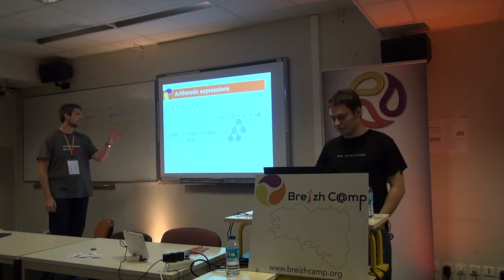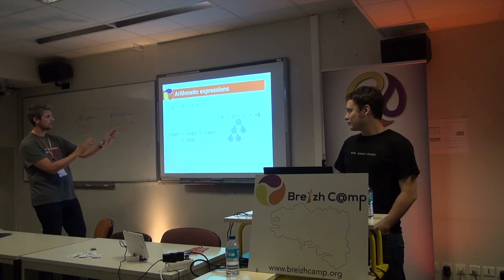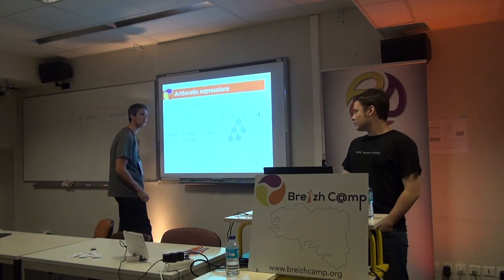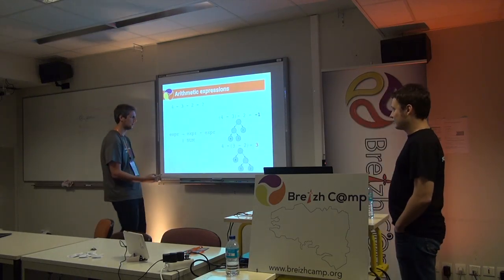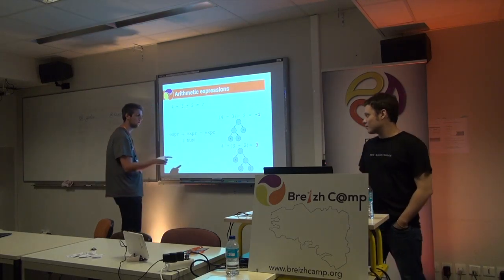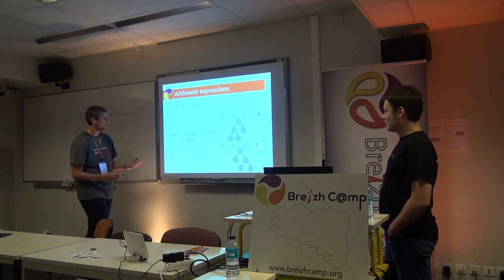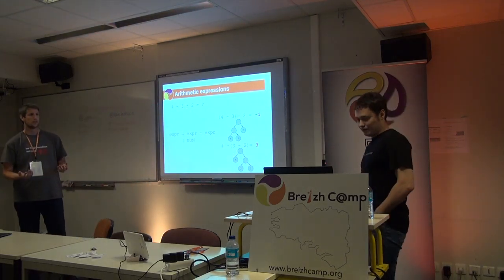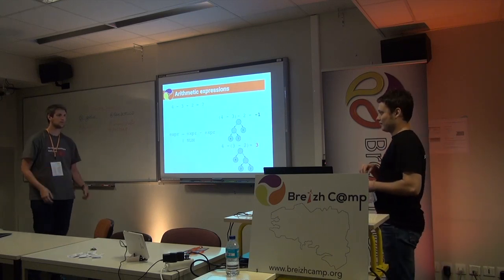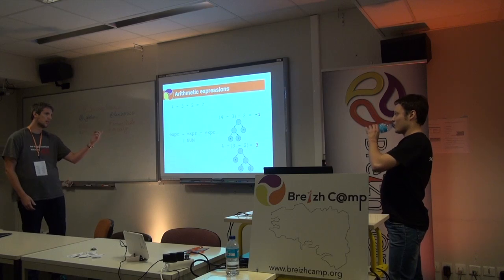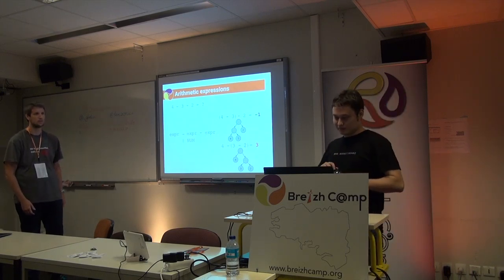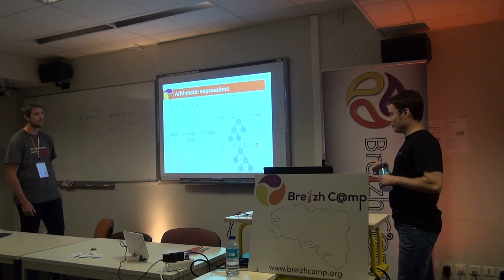We can generate the tree based on this. But hold on — actually I can see this as the first expression minus the number, or I can see it the other way: as a number minus another expression. So I have another tree. Based on the same input, I can actually have two results. Given that arithmetic is used a lot in banks, I don't think it's fair to have different answers. So this is probably wrong.